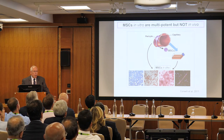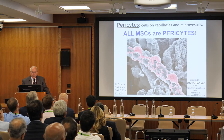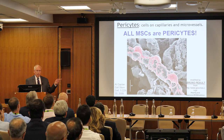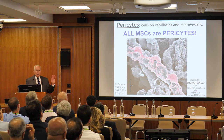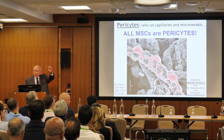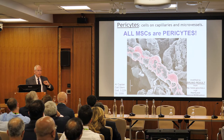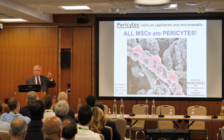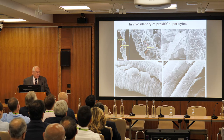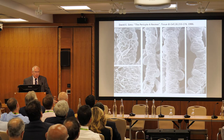MSCs are multipotent on a petri dish, but not in vivo. What they are now is perivascular cells. This is actually a blood vessel in heart. This morning when Dr. Tremolata took his blood pressure medication, this is the cell that reacted. If you want high blood pressure, that cell squeezes the blood in that vessel. If you want low blood pressure, it relaxes. That's the vasoactive agent in your vasculature. Every cell you see is a pericyte — a potential MSC.